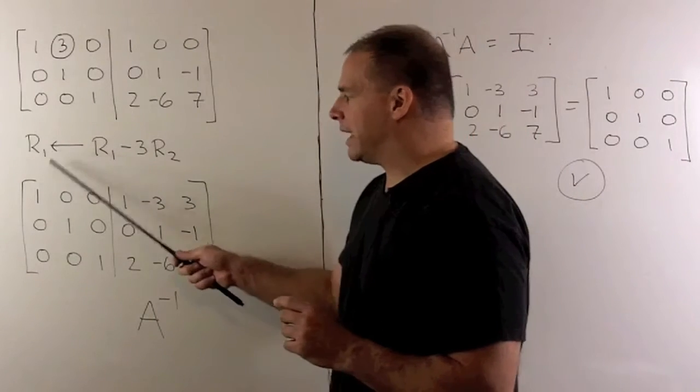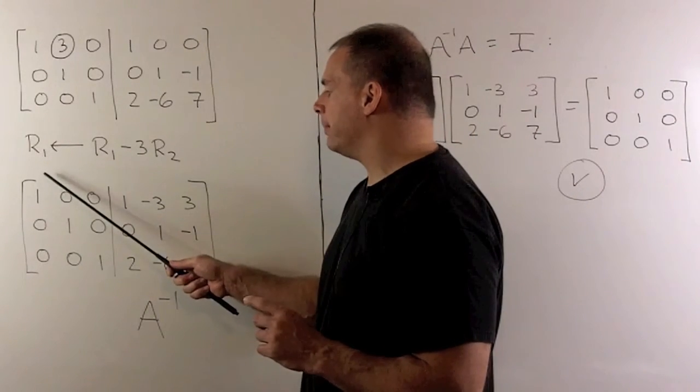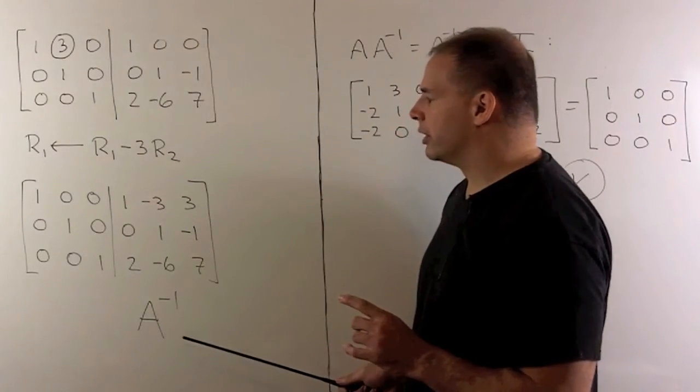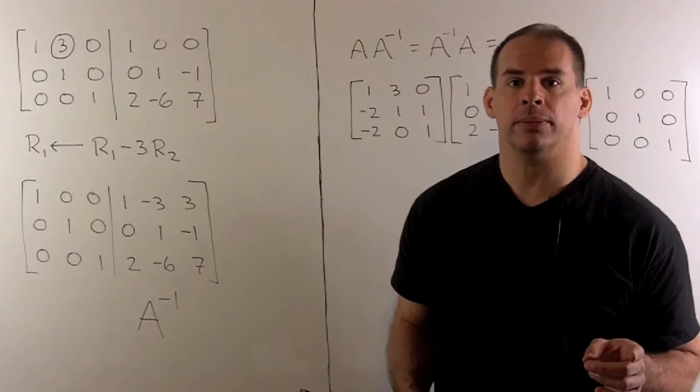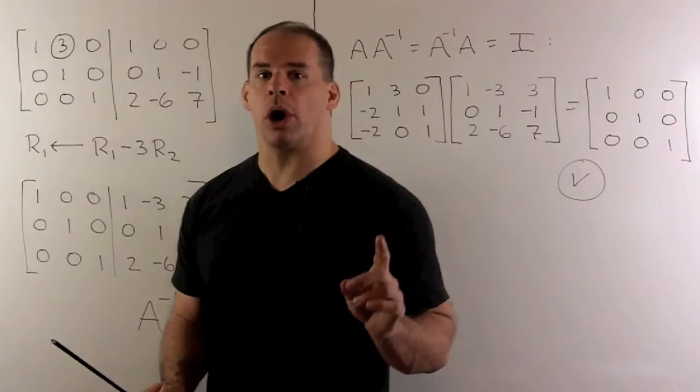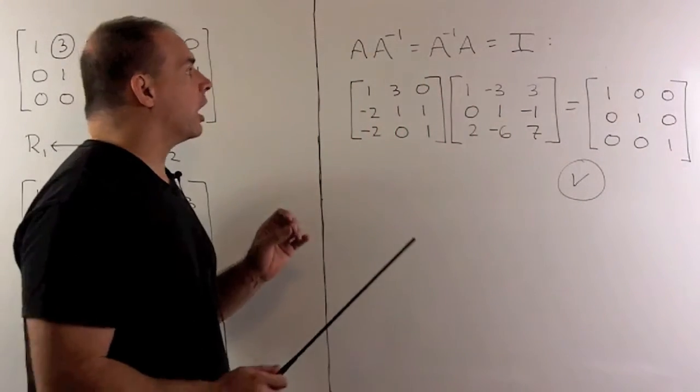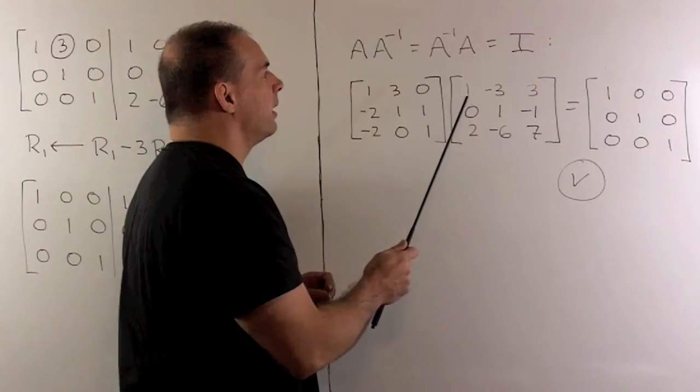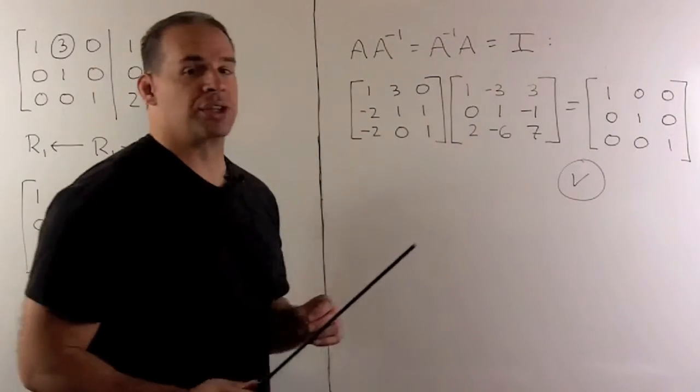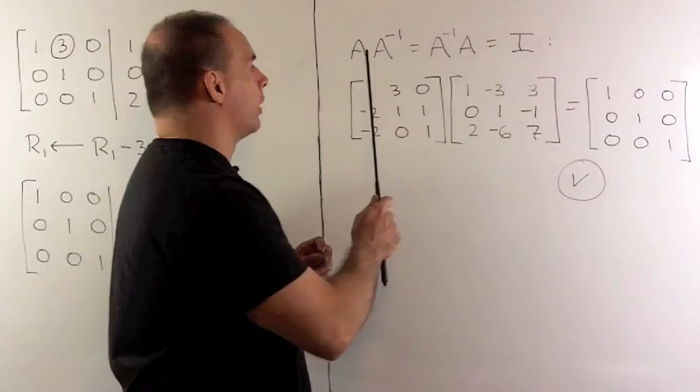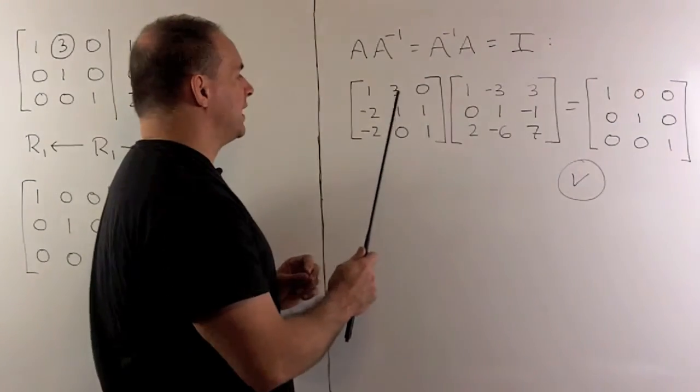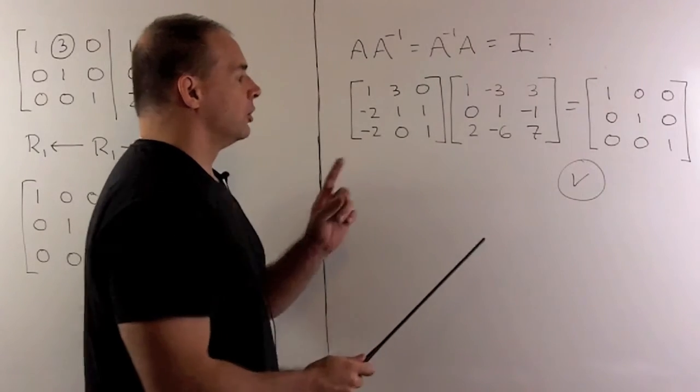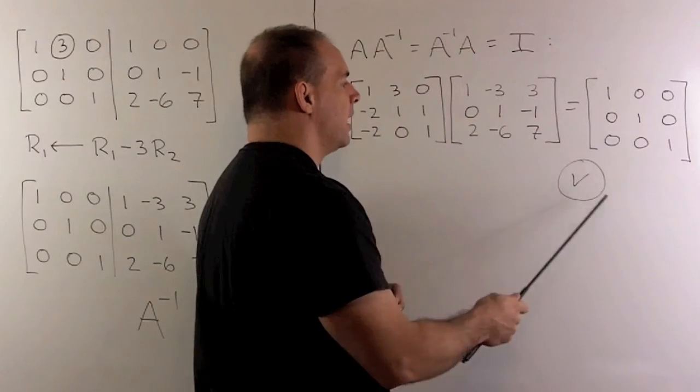Now, we have an identity matrix in the first slot. So, that means the second slot is what we're looking for for A inverse. So, that's our problem. Now, of course, we check our work. The check here, if I take A times A inverse, that's equal to A inverse A, which is equal to the identity matrix. So, it's enough to check one of these. So, if I take A times A inverse, you work out all those products, you'll see that the identity matrix comes out, and our work is checked.